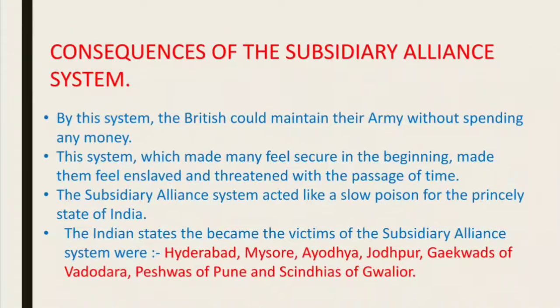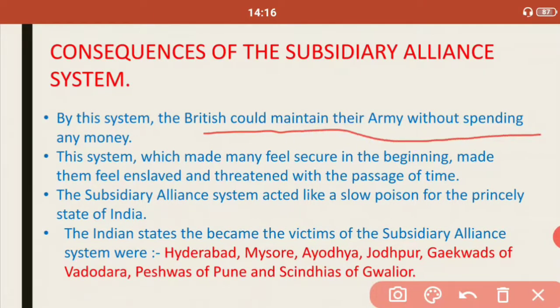Now let us move to the consequences — that is, the results — of the Subsidiary Alliance System. By this system, the Britishers could maintain their army without spending any money, because the state provided food, shelter, and all expenses. Second, this system made many states feel secure in the beginning, as they felt the Britishers were their friends. But eventually they came to understand that this system was like enslaving them — it acted like a slow poison for the princely states.